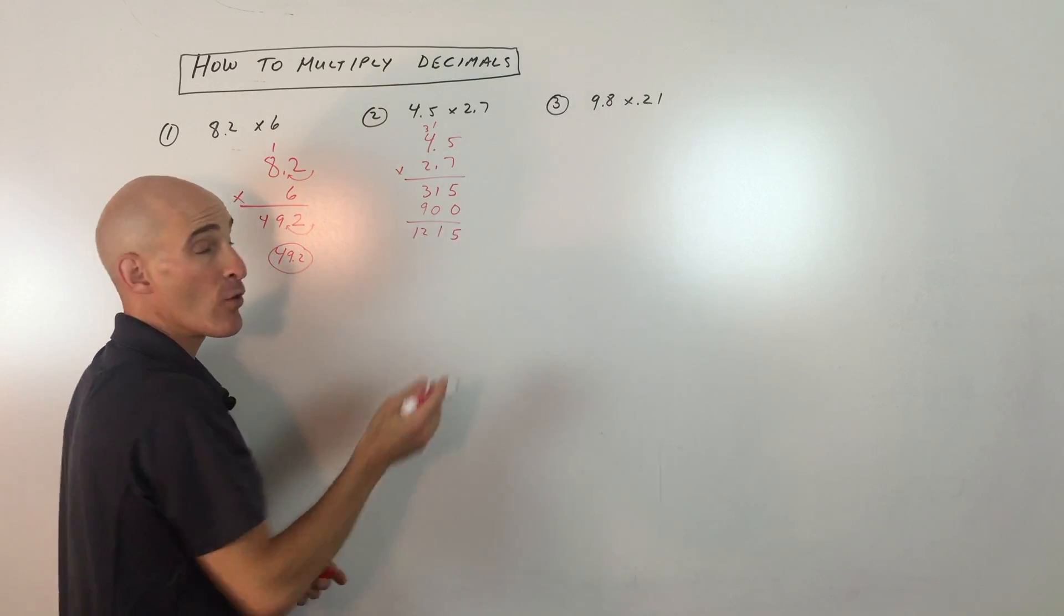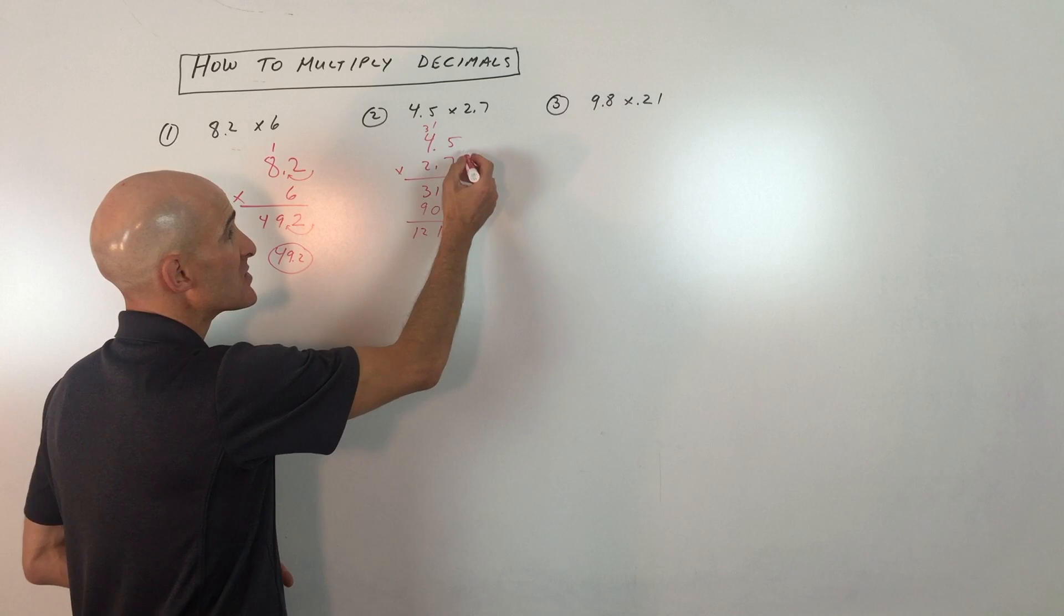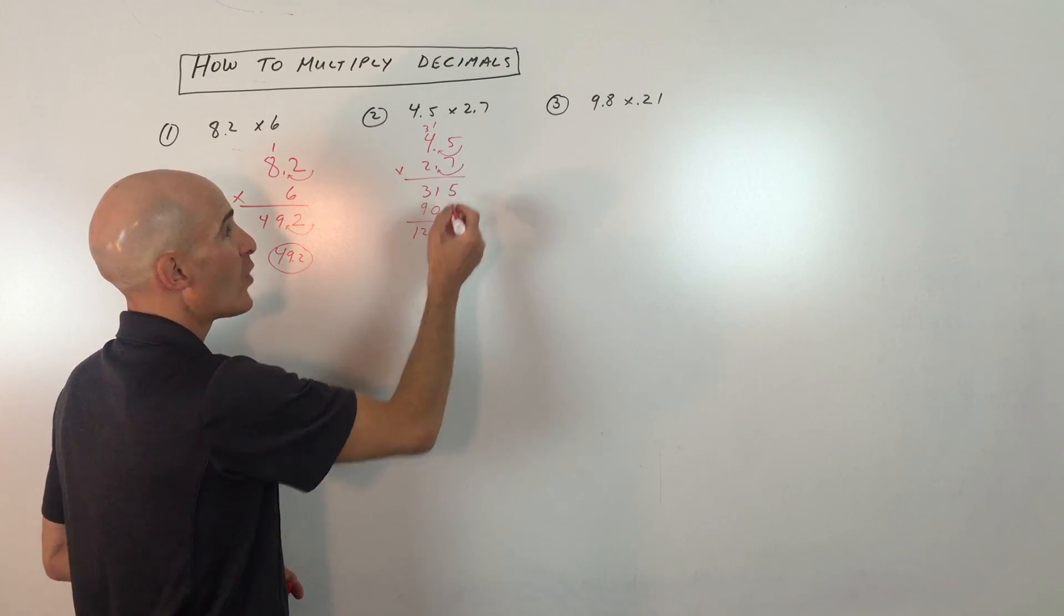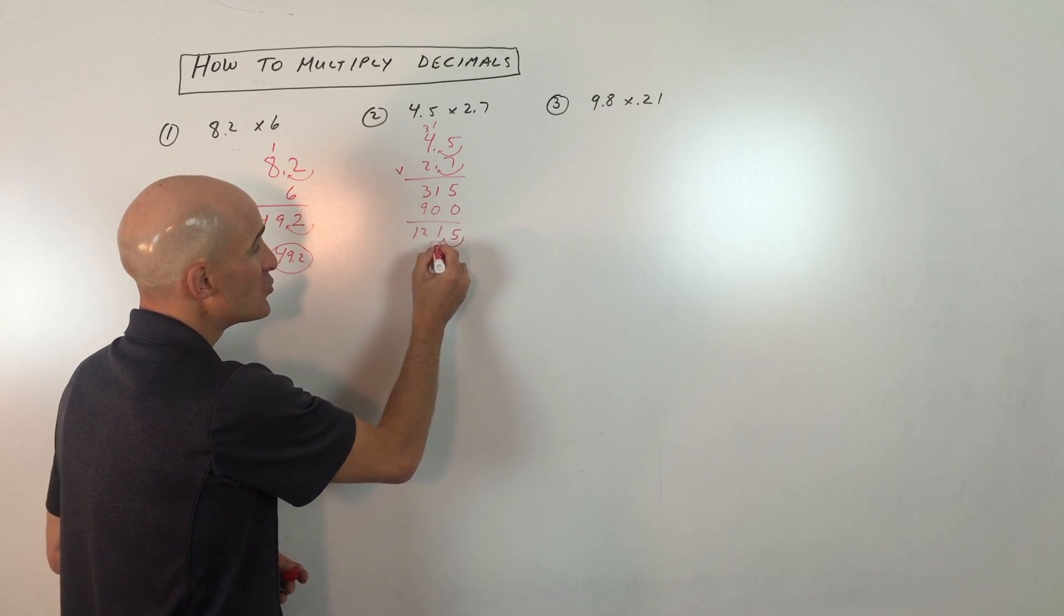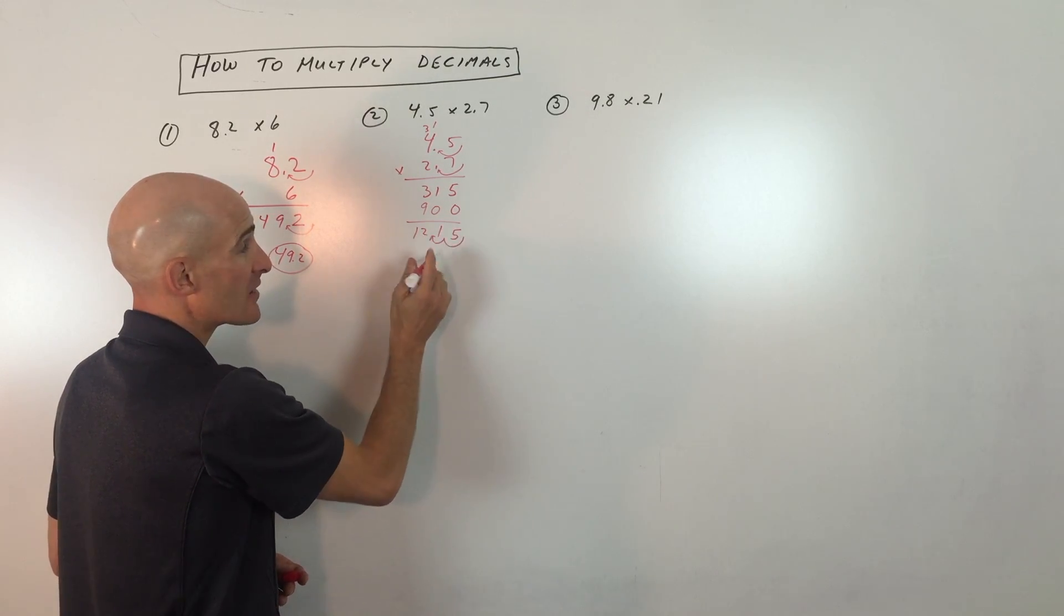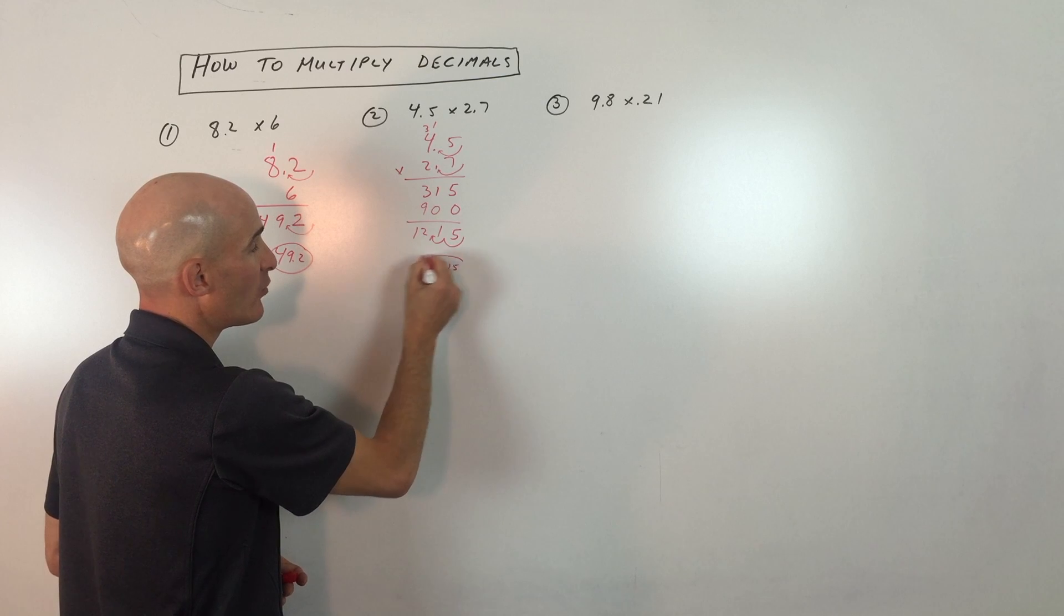Now what we do is we count the number of decimal places. So we say this has been moved once. This has been moved once. That's 1 plus 1, which is 2. So I'm going to move this decimal point two places to the left from the right side of the number. So the final answer is 12.15.